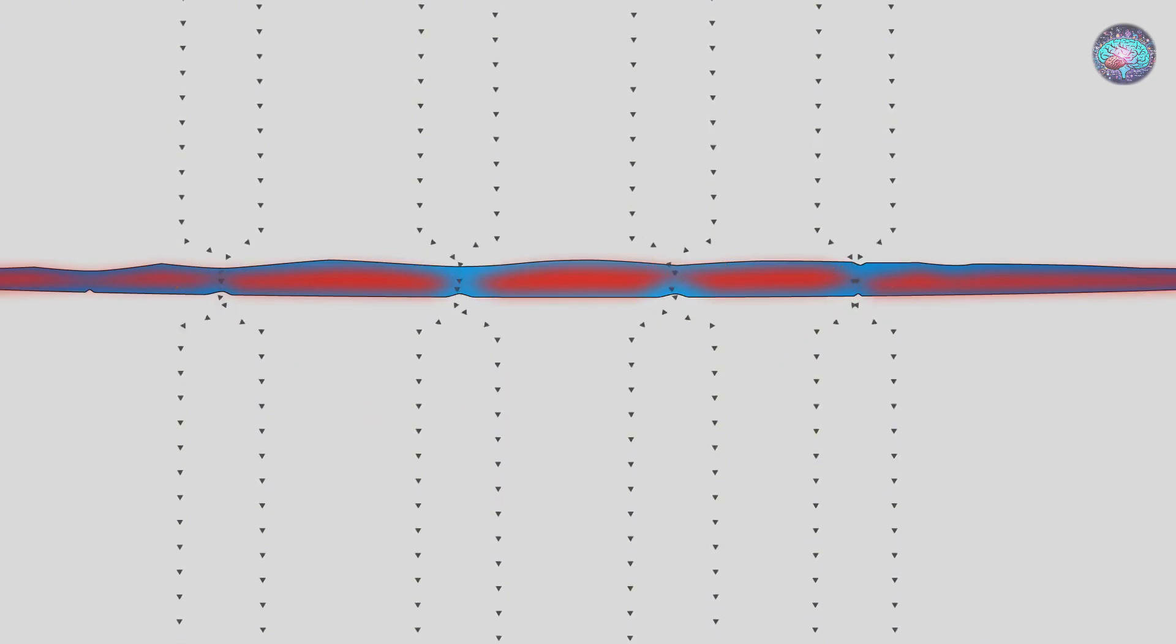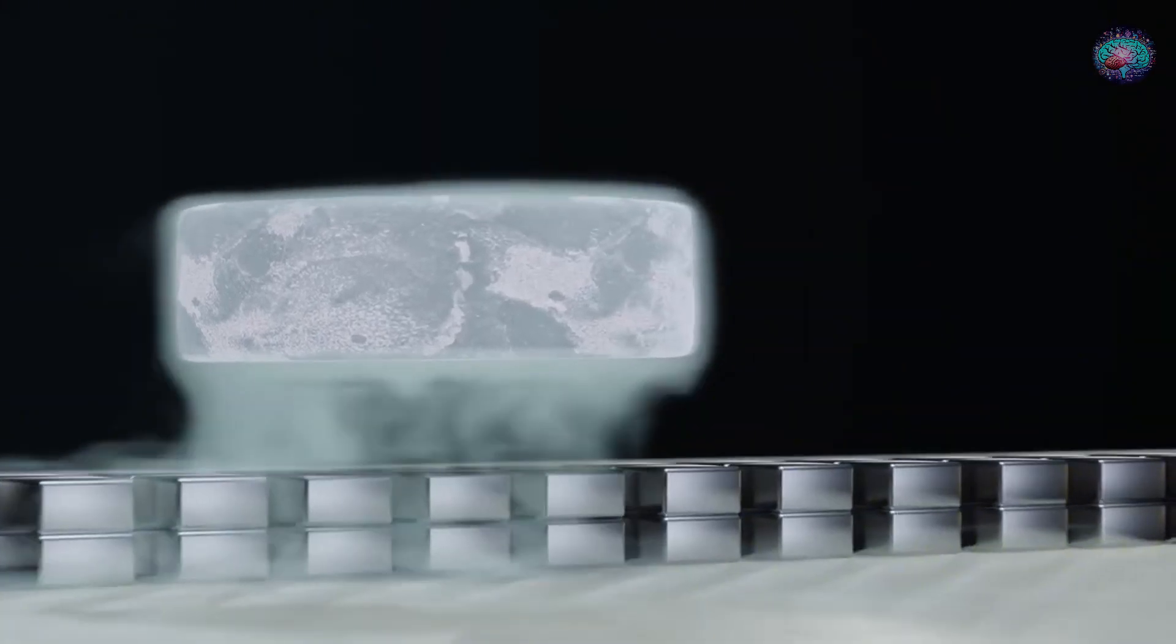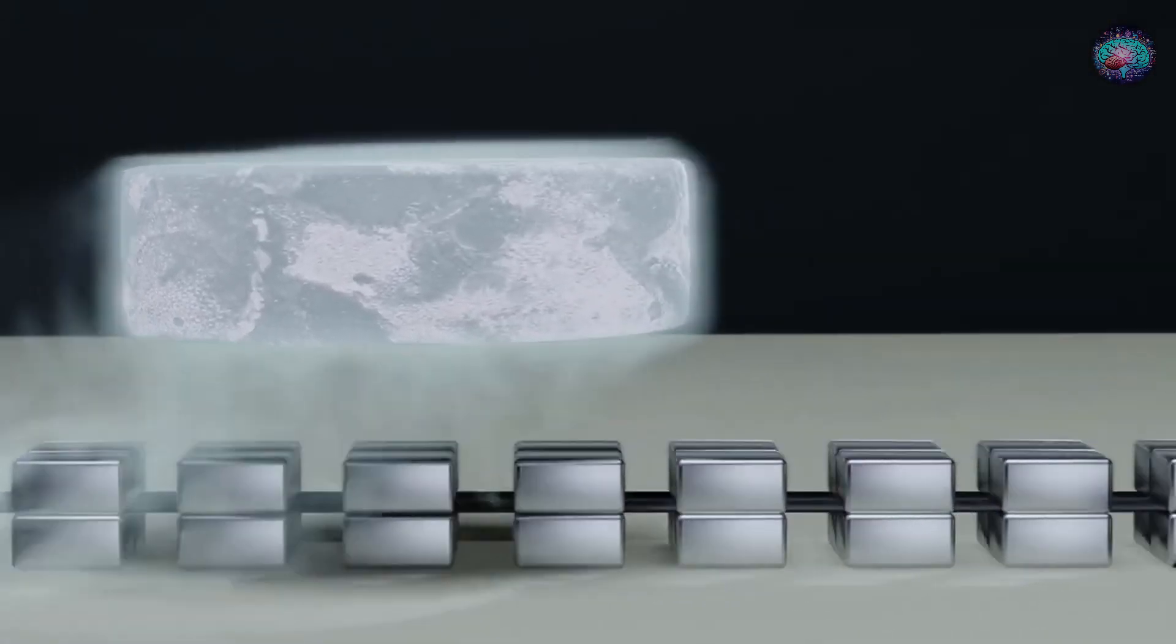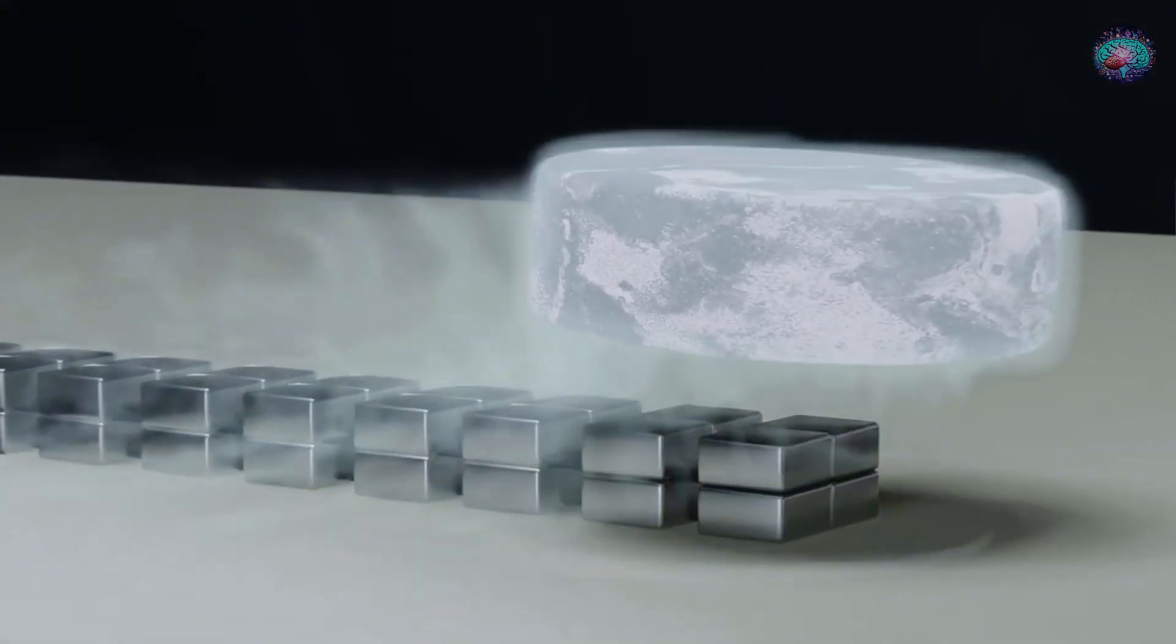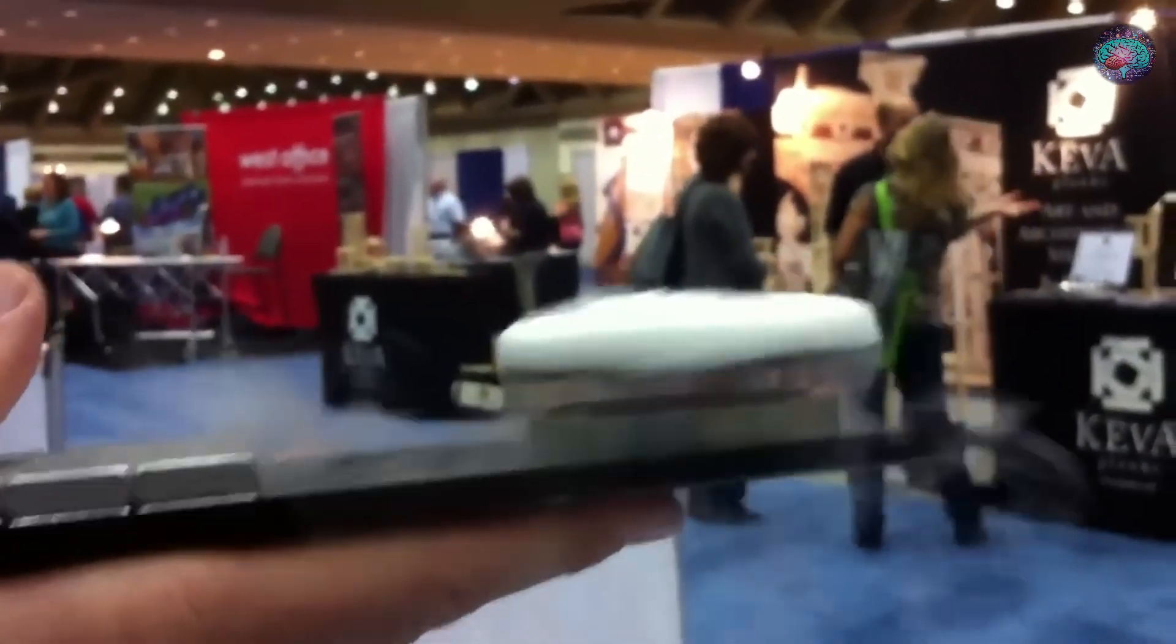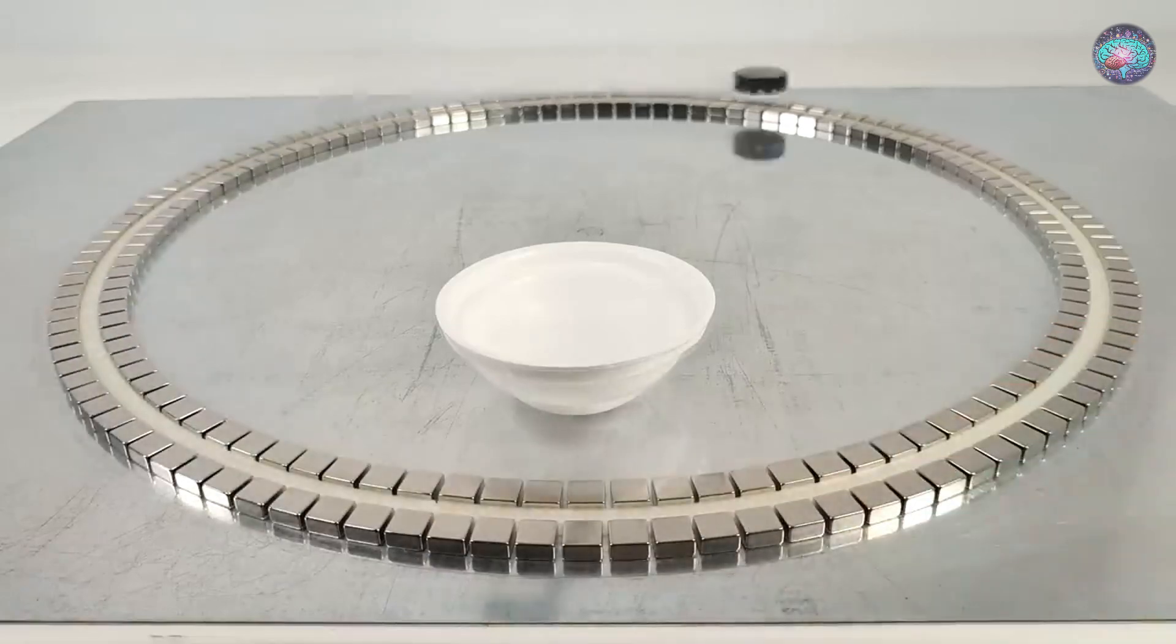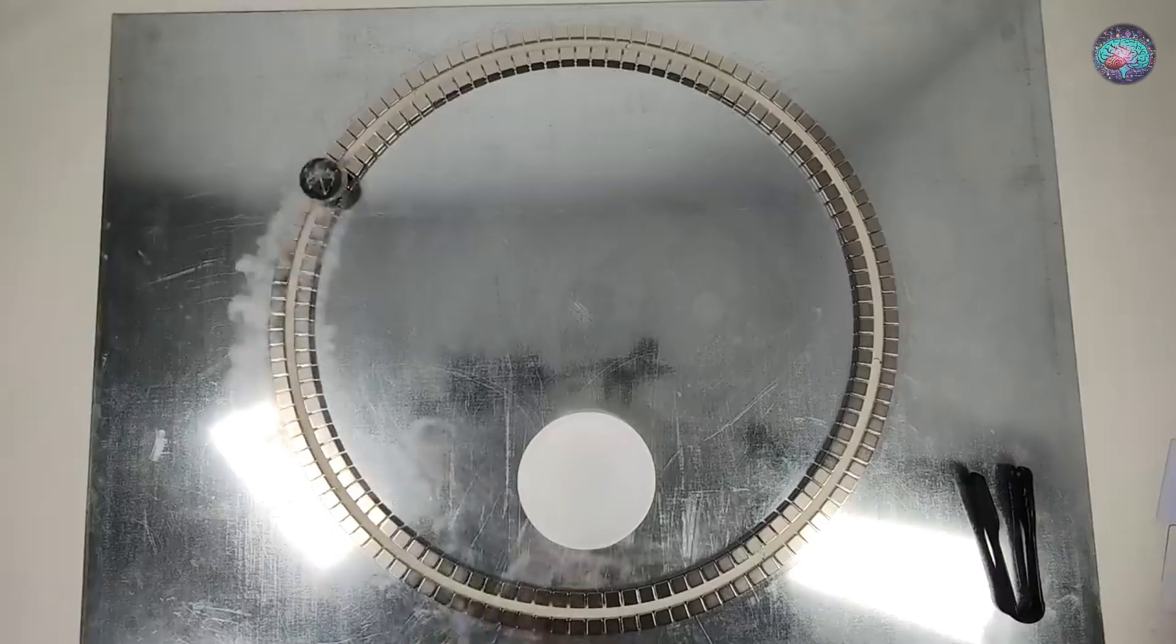At the locations of these quantum vortices, the superconducting properties are locally disrupted, and any movement of the superconductor in space causes these particles to move as well. To prevent the destruction of the superconducting state throughout the entire material, the superconductor locks itself into a fixed position within three-dimensional space, thereby keeping the position of the magnetic field particles from changing.